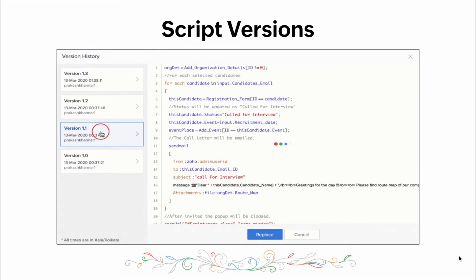Now let's talk about script versioning. The Deluge editor allows you to keep different versions of your script automatically. This way, you don't have to worry about making changes to your scripts and accidentally losing information you might have written days before. You can roll back and forth between different versions of your script and not have to worry about losing any information. This is a very neat feature that the Deluge editor provides.